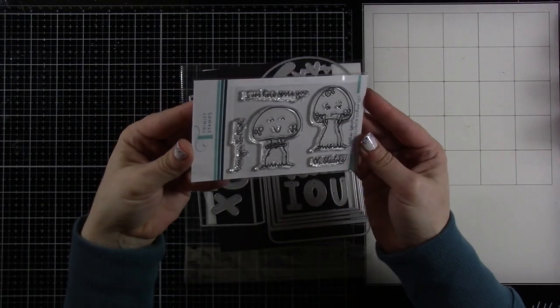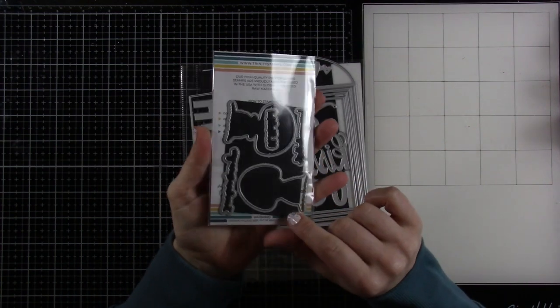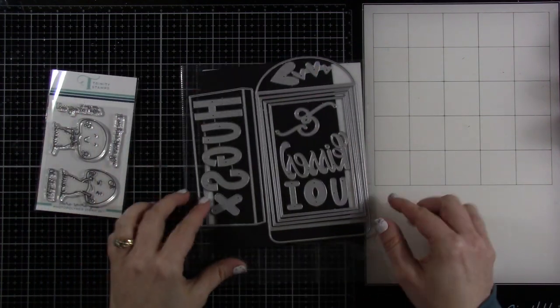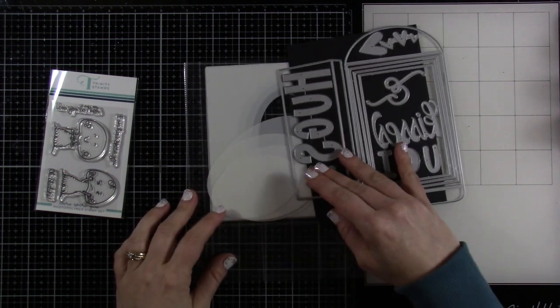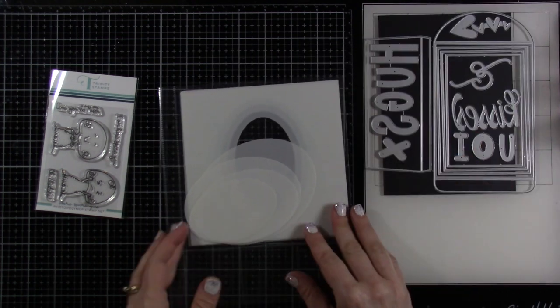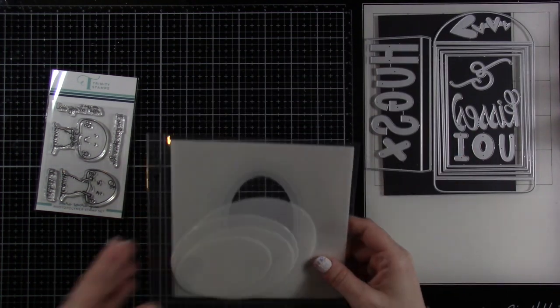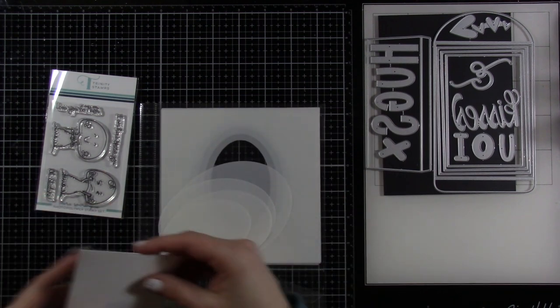This is the Here's For You Stamps and the matching dies. These are so stinking cute, those darling little mushrooms with hands and facial expressions. We're also going to be using the 4-bar Envelope Builder and the A2 Foundation's Oval Stencil.